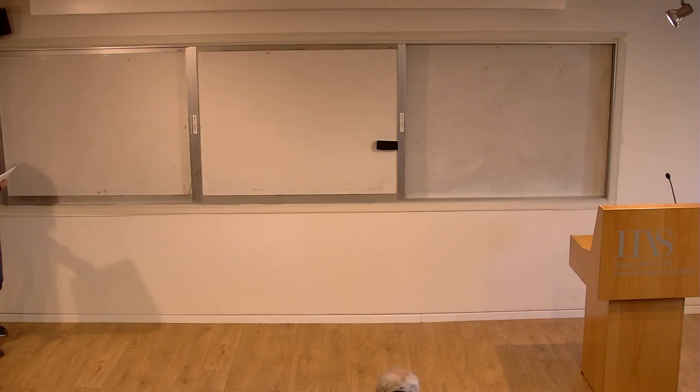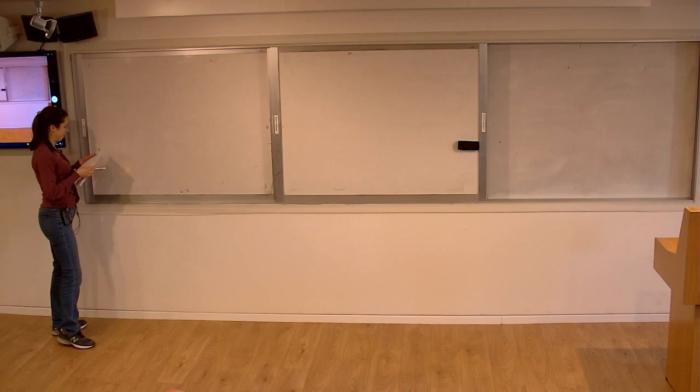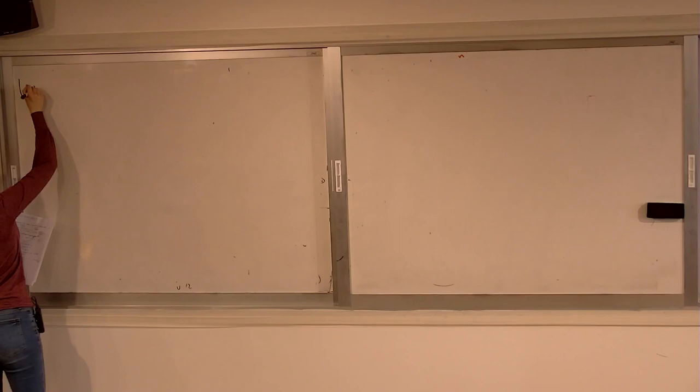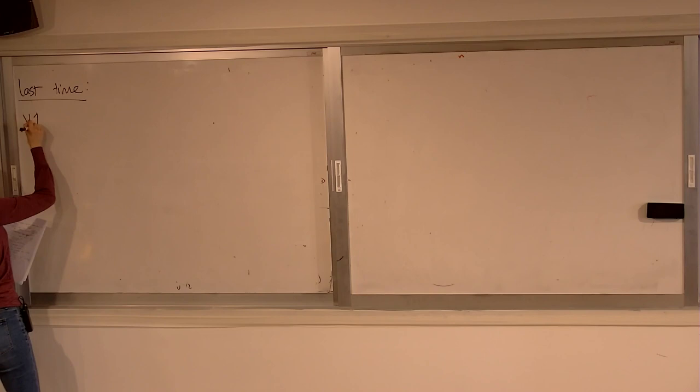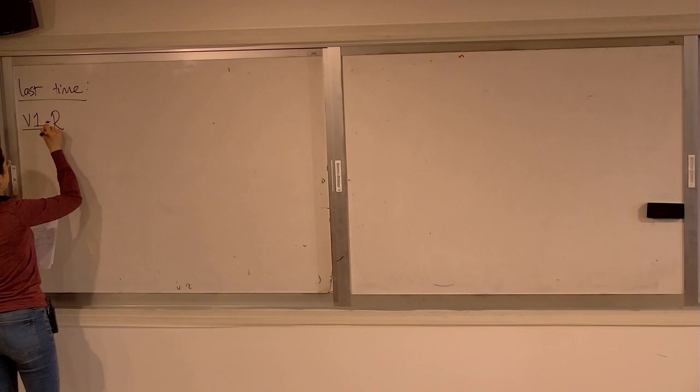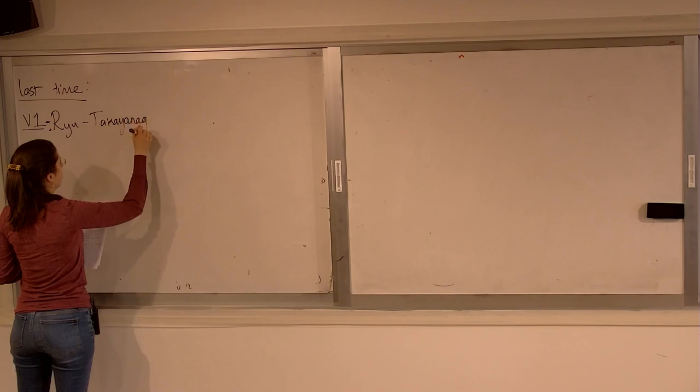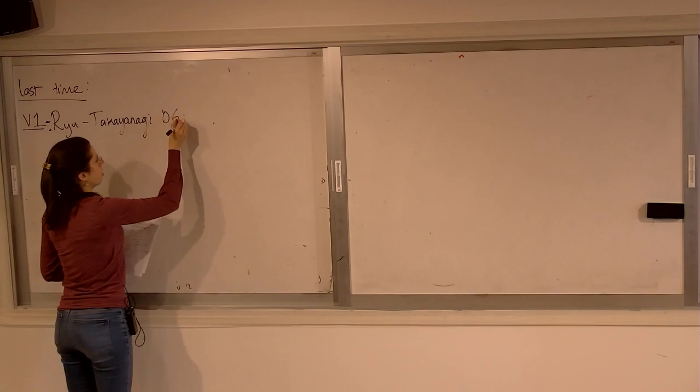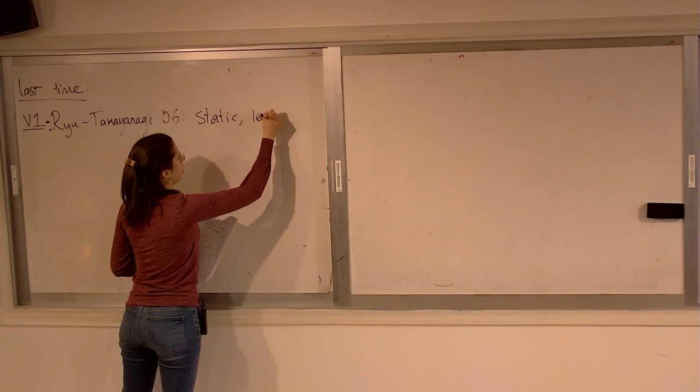Okay, hi everyone. So lecture two of reconstruction and complexity. Let me just remind you briefly what we finished with last time. At the very end, we talked about what I called V1, holographic entanglement entropy, which is Ryu-Takayanagi, dating to 2006. This is for spacetimes when the bulk is static, and to leading order in G Newton, meaning exactly classical.